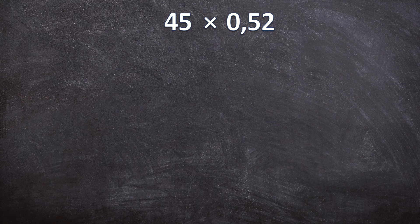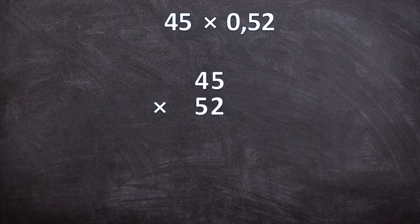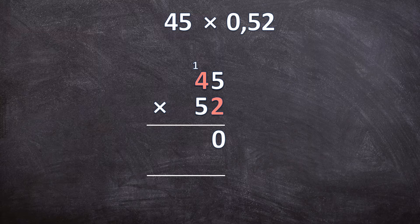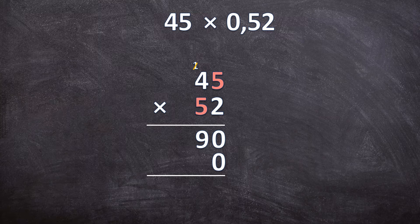For the third example we have 45 times 0,52. Write it as a normal multiplication sum without decimal separators, and remember the 0 in front doesn't mean anything so leave it out — we have 45 times 52. Draw your two lines and start multiplying: 5 times 2 is 10, write down your 0, carry over your 1. 4 times 2 is 8, plus the 1 carried over is 9. Cancel that 1, and because we're multiplying by 50 and not just 5, add a 0 in the next line.